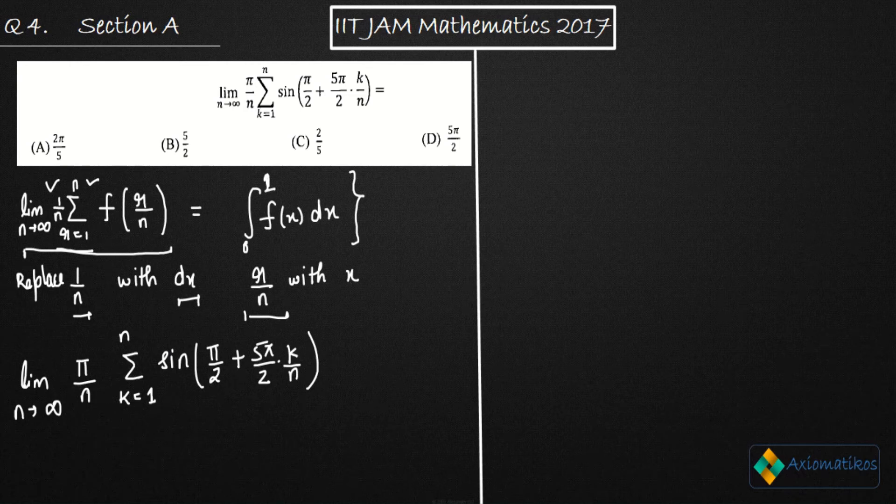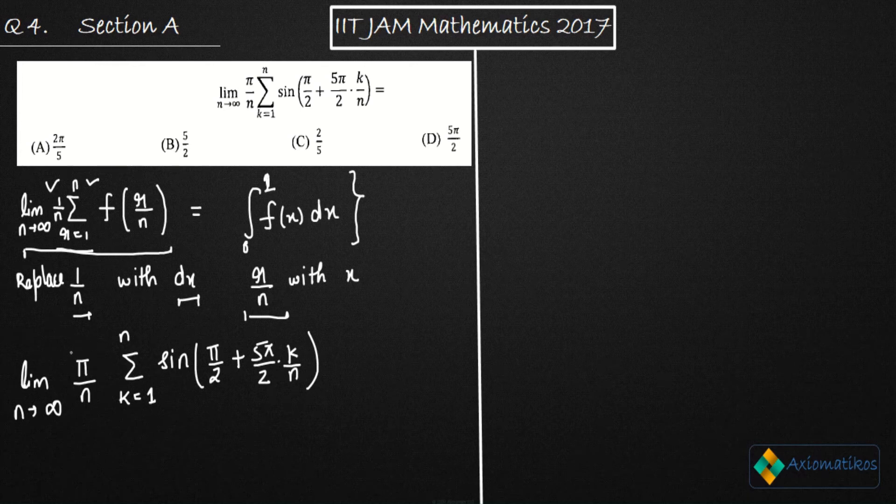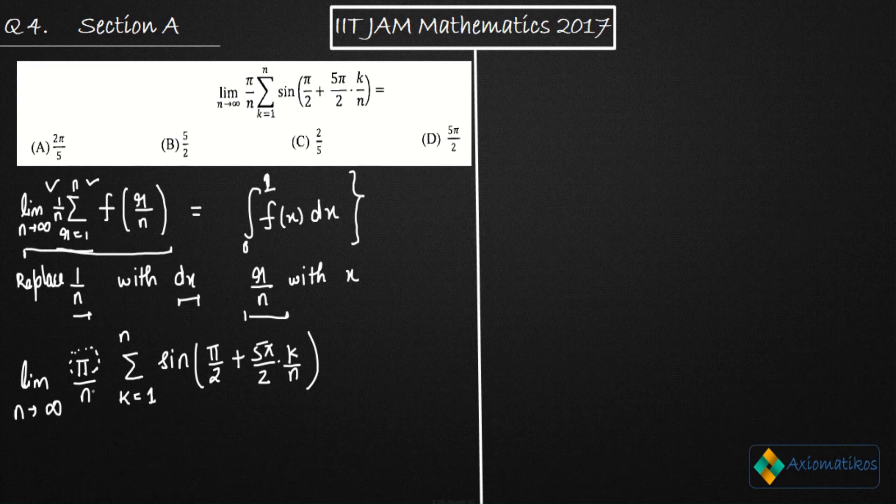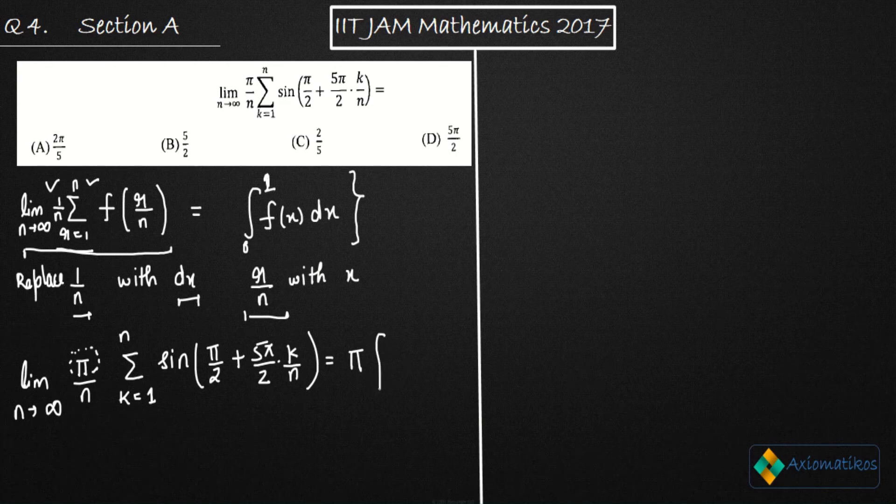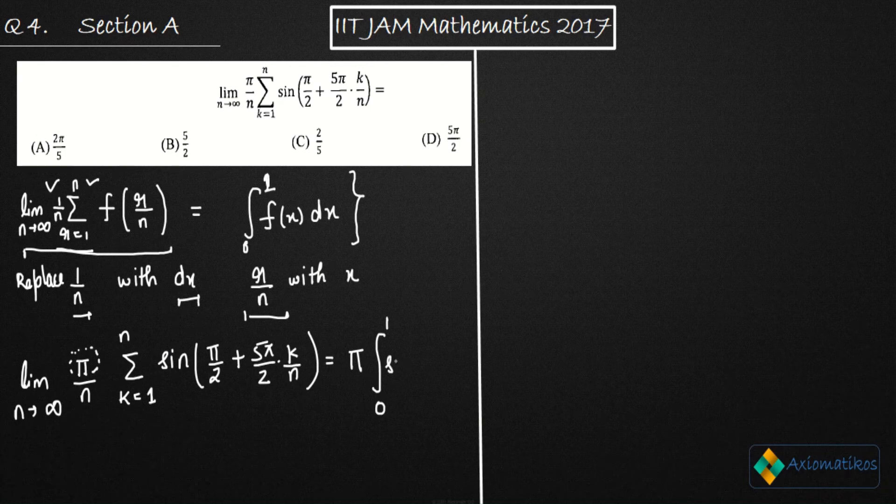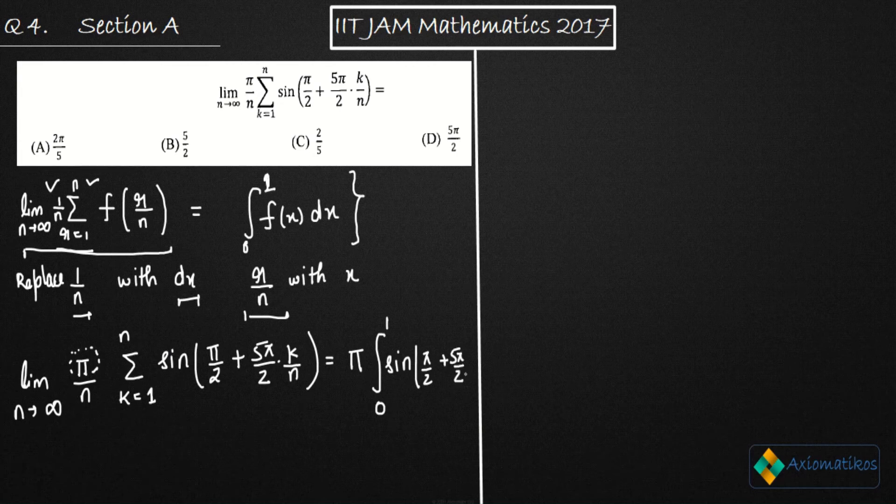We have K over N sine pi by 2 plus 5 pi by 2 dot K over N. So this is your limit. Finally, this 1 over N - I can take pi outside of it. This pi I will take outside. So 1 over N will be there.